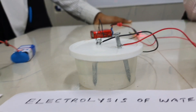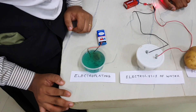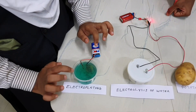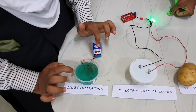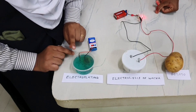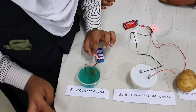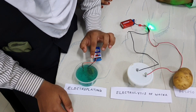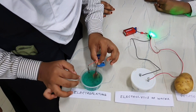Electrolysis of water. This is an experiment of electroplating. In this experiment, copper sulfate solution is taken as the electrolyte. Copper is taken as the anode, and a 5 rupees coin is taken as the cathode. Thank you.